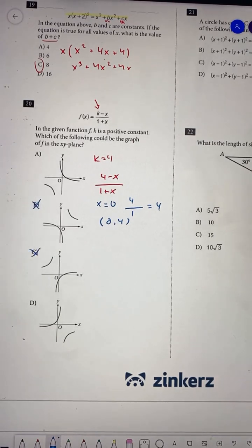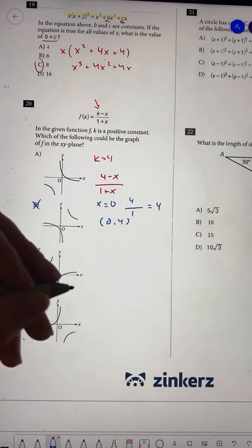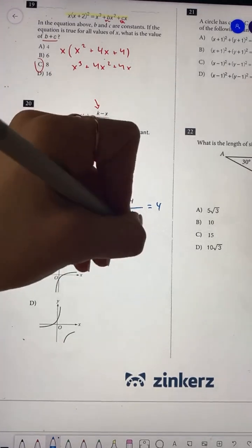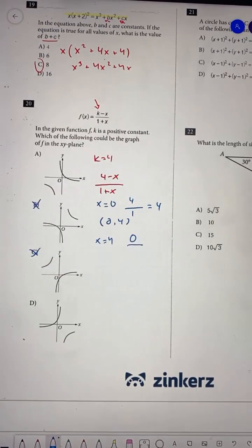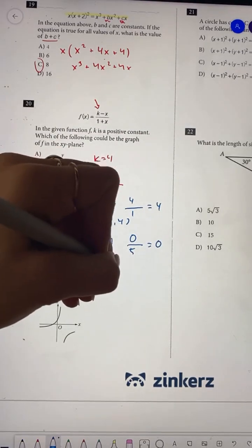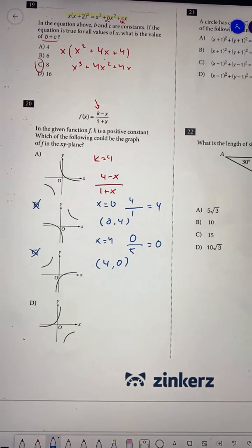I still have A and D, so now I need to pick another point. Let's say x is equal to 4. So now I get 4 minus 4, that's 0, over 1 plus 4, that's 5. So now I get 0. So now I want to look at a graph that could pass through the point 4, 0.